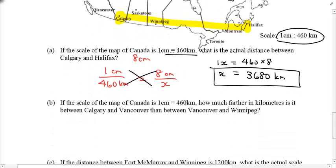Part B says if the scale of the map is still the same, how much farther in kilometers is it between Calgary and Vancouver? So you're gonna be now looking at this distance, calculating that, or measuring that. And then between Vancouver and Winnipeg, that's this distance. Do some measuring.